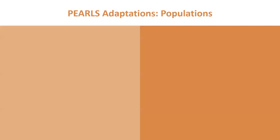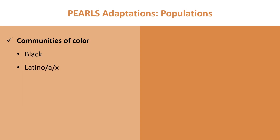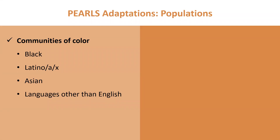Let's next talk about some of the populations where PEARLS has been delivered since the original research study. Some communities of color include Black older adults, including African-Americans and Somali refugees. Latino populations, including first and second generation immigrants from Mexico, Puerto Rico, the Dominican Republic, and other countries of origin in South and Central America. Asian communities, including Vietnamese, Chinese, Korean, Filipino, and Cambodian older adults. And people who speak languages other than English within these communities of color, as well as white populations.